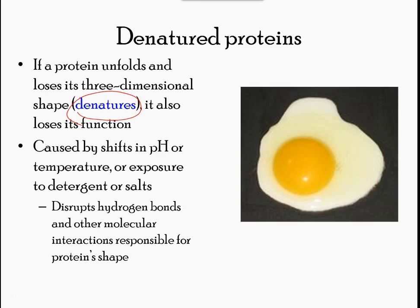One example of protein denaturation can be seen when an egg is fried or boiled. The albumin protein in the liquid egg white is denatured when placed in a hot pan, changing from a clear substance to an opaque white substance.